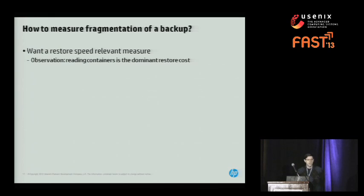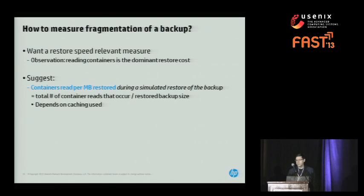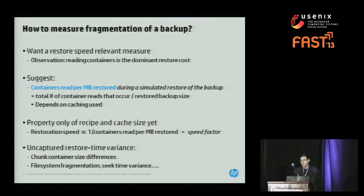How should we measure the fragmentation of a backup? We want a restore-speed-relevant measure. We observe that reading containers is the dominant restore cost, so we suggest the following fragmentation metric: containers read per megabyte restored during a simulated restore of the backup. We simulate restoring the backup, count every time we access a disk to read in a container, and divide by the size of the backup restored. This fragmentation metric has a nice property: it depends only on the recipe and the cache size, not on I/O characteristics. The restore speed is proportional to one over the containers read per megabyte restored — we just call this the speed factor.